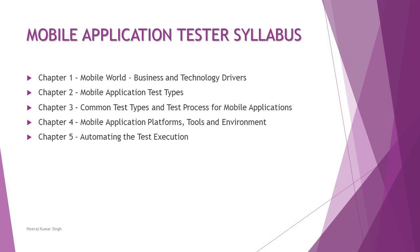Moving to the overall syllabus: it is broken into five chapters. Chapter One covers the mobile world — business and technology drivers that trigger mobile application creation and testing. Chapter Two covers types of mobile applications in depth — hybrid, native, and browser-driven applications among others. Chapter Three covers common test types applicable during mobile application testing, plus an overview of the test process for mobile applications and how it differs from general testing.